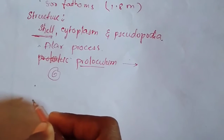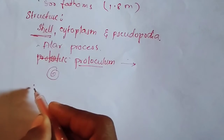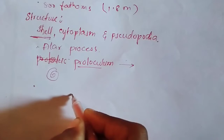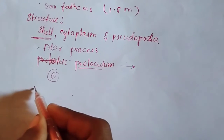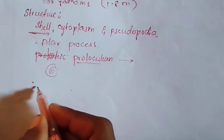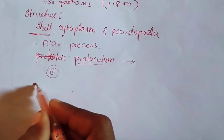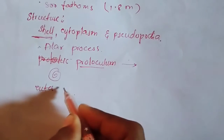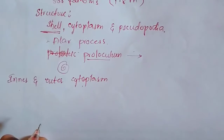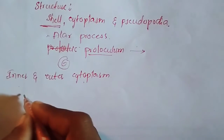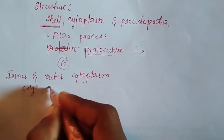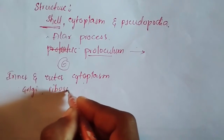The cytoplasm that lies inside the shell is called inner cytoplasm, and the small layer of cytoplasm that covers the outside of the shell is called outer cytoplasm. The cytoplasm contains many organelles like the Golgi complex, ribosomes, and mitochondria.